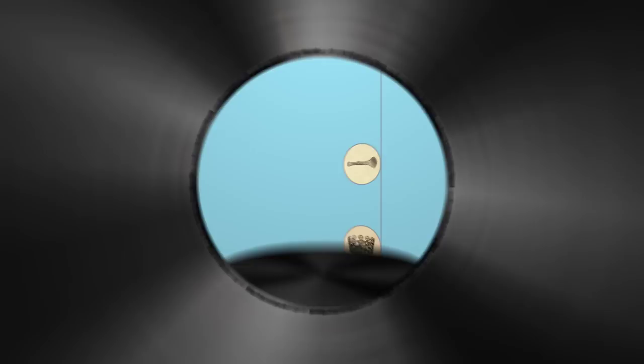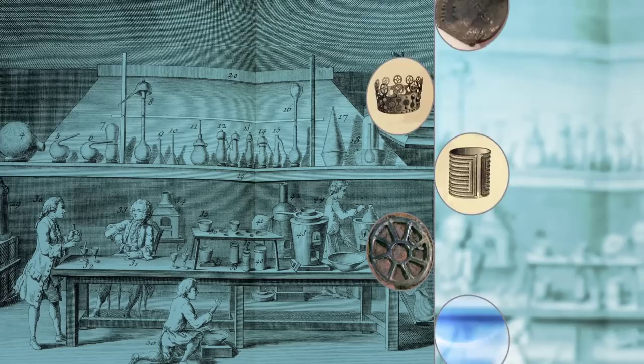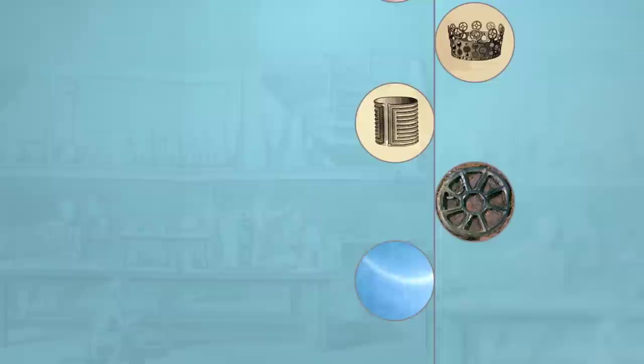Iron has been known to man for more than 5,000 years, but it's only in the 18th century that scientists make a rapid succession of discoveries concerning previously unknown metals.